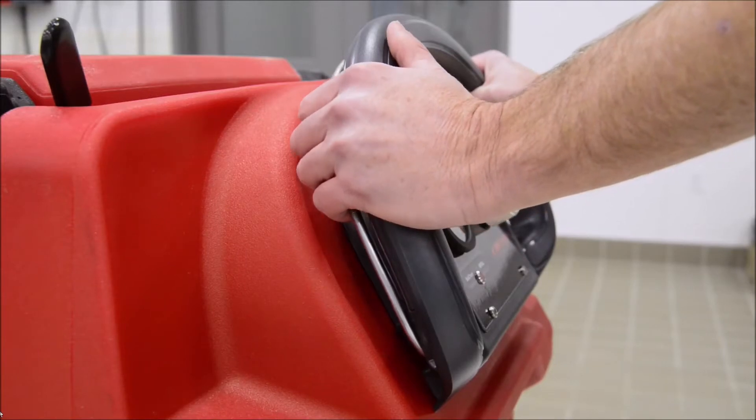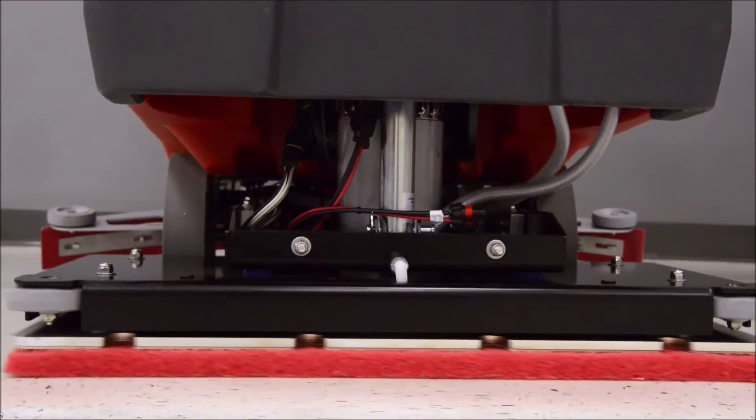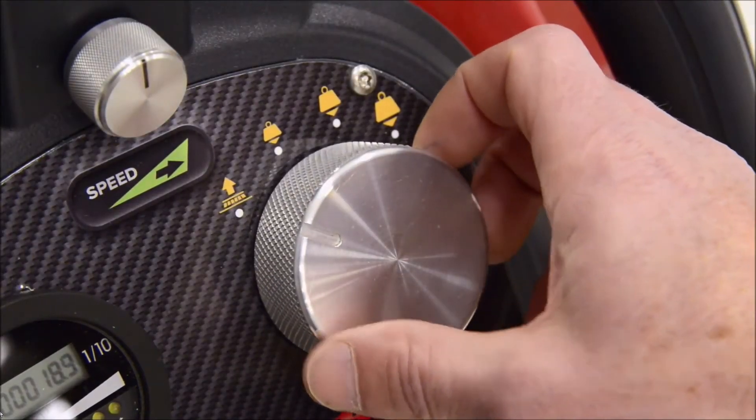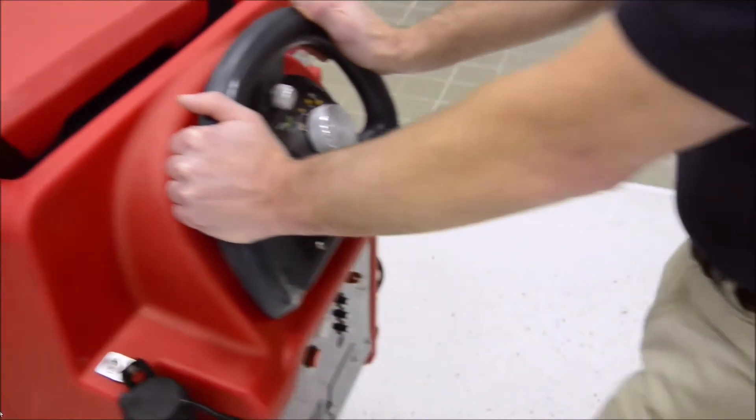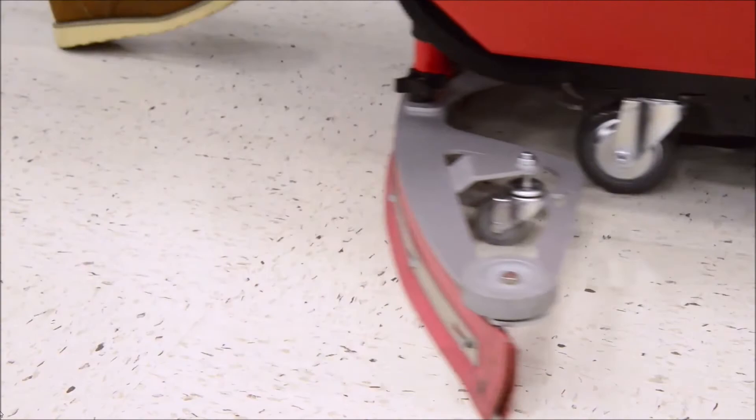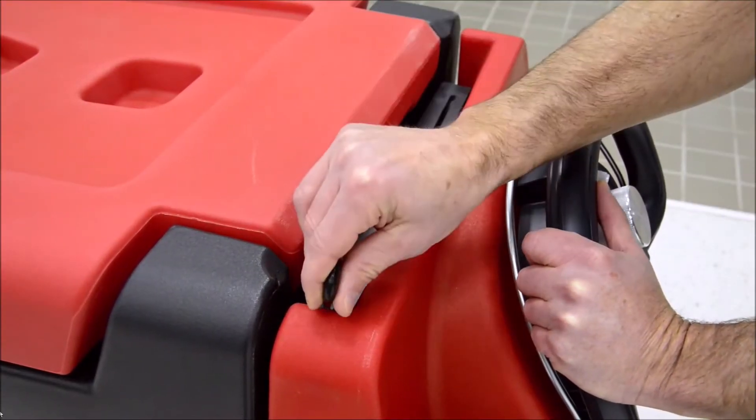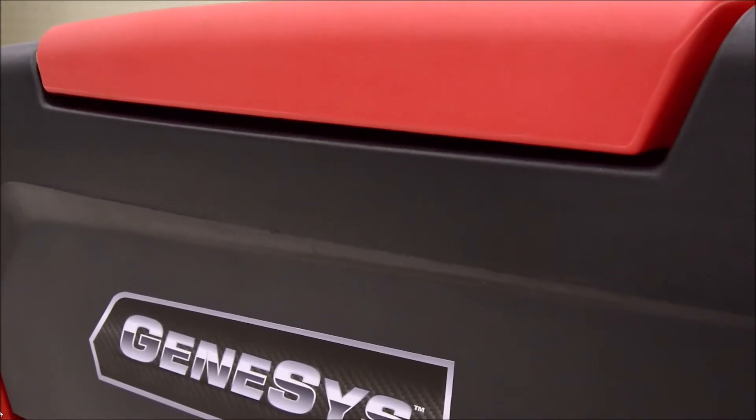To stop the machine, let go of the bail activation trigger, which will also deactivate the scrub deck and solution flow. Move the scrub deck position knob to the up position. Before raising the squeegee, activate the bail trigger to move you forward and recover the solution that is still on the floor. Once recovered, you can raise the squeegee. The vacuum fan will continue to run for a few seconds to evacuate the recovery hose.